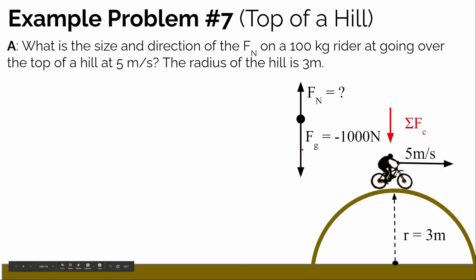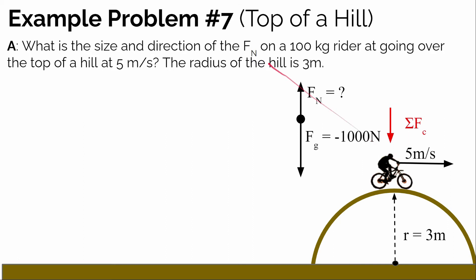The gravitational force points down, and that's where the center of the circular path is. So the gravitational force has to be bigger than the normal force. To solve for the normal force, we first need to figure out the required size of the net force on the biker — mass of 100 kilograms moving at 5 meters per second.